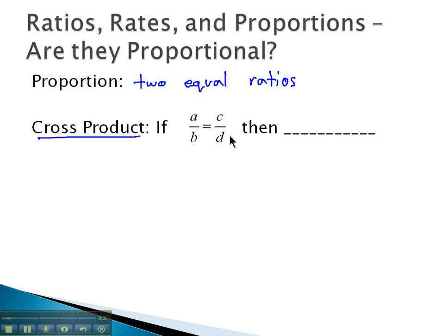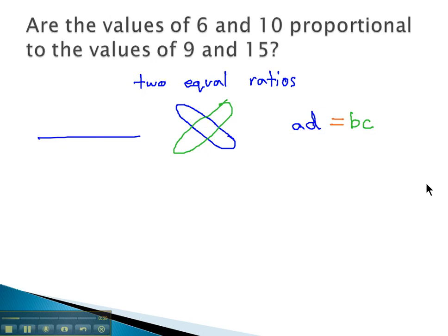then what we can do is we can multiply the diagonal, a times d, and multiply the other diagonal, b times c, and those two products will be equal to each other. And that's what makes values proportional. This cross product is a very important foundation to how we work with proportions.